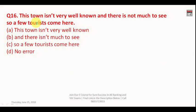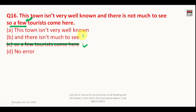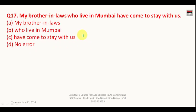Question number sixteen: 'This town isn't very well known and there is not much to see so a few tourists come here.' The sentence is negative in nature — the town is not well known and there is nothing much to see, so why would tourists visit? 'A few' carries a positive meaning, but here you need to convey a negligible number of tourists. You must say 'few tourists' instead of 'a few tourists.' The answer is C.